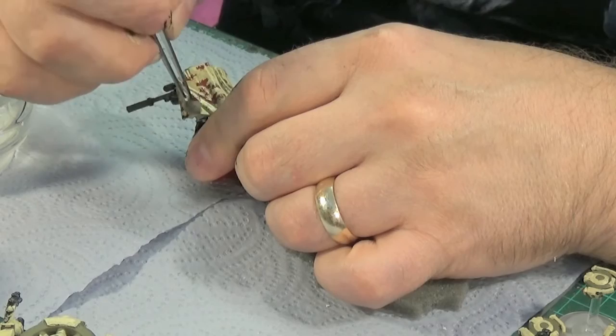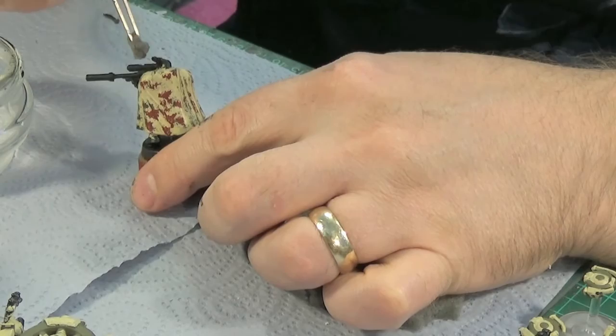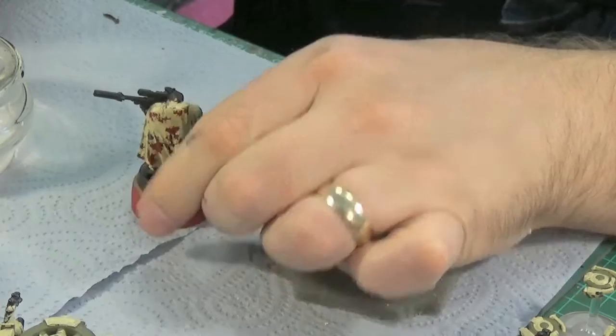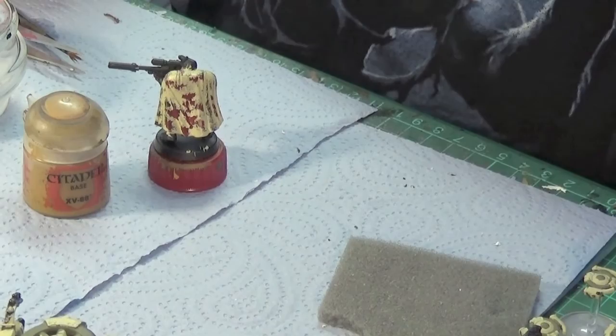Depending on how you have your piece of sponge folded depends on how easy it is to get into the little crevices of the cloak. But that's okay, it's all random anyway.